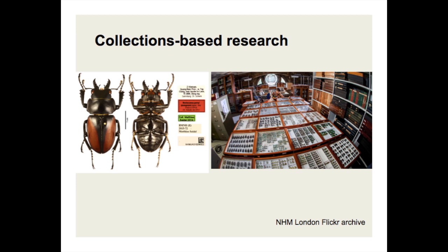In museums around the world, there are hundreds of millions of specimens of all kinds of organisms and minerals and different objects from the natural world, and they've all been given names. It's this process of naming these objects — the taxonomy — which forms the foundation, at least in biological sciences, for many other sub-disciplines. Finding these organisms in nature, collecting them, giving them names, putting them in museums, which are then repositories for biological objects, is extremely important.